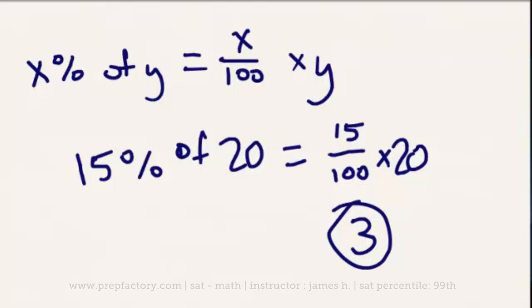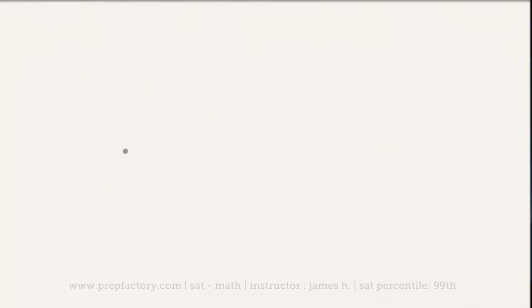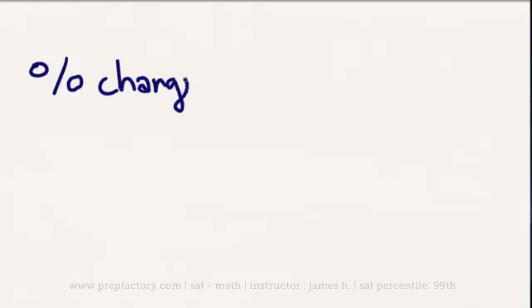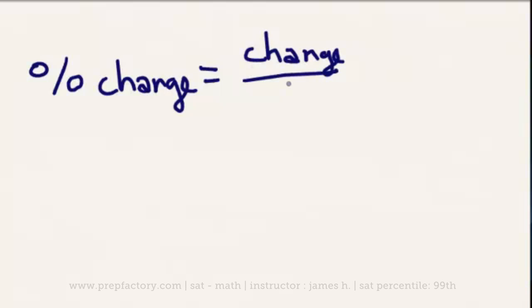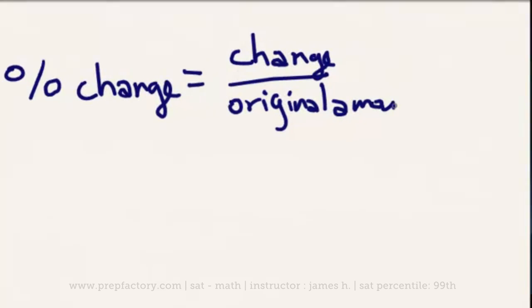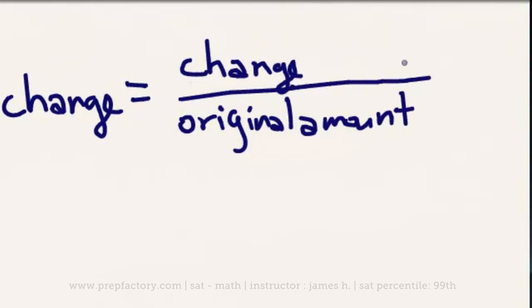The final percentage formula we need to discuss is the percent change formula. Percent change equals the actual change over the original amount, times 100%. Again, you can just move the decimal point two places to the right. Let's look at a quick practice problem to demonstrate that.